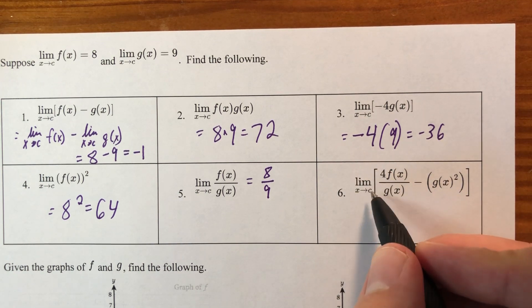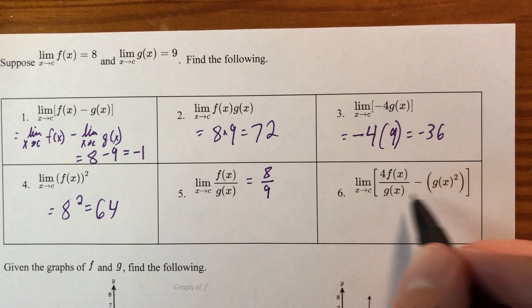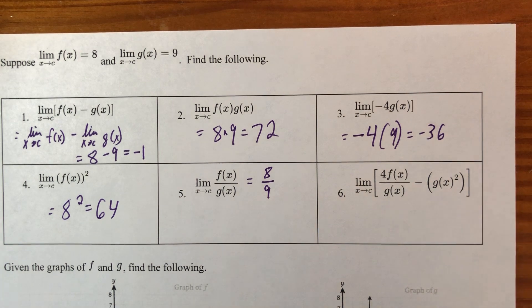I have 4 times the limit as x approaches c of f of x divided by the limit as x approaches c of g of x minus the limit as x approaches c of g of x, and then I'd square that whole thing.